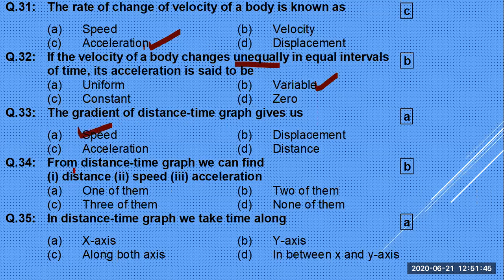The gradient of a distance-time graph gives us speed. From a distance-time graph, we can find both distance and speed — these are the two quantities. We take time along the x-axis. Distance divided by time is speed, so if you know distance you can calculate speed from the graph.